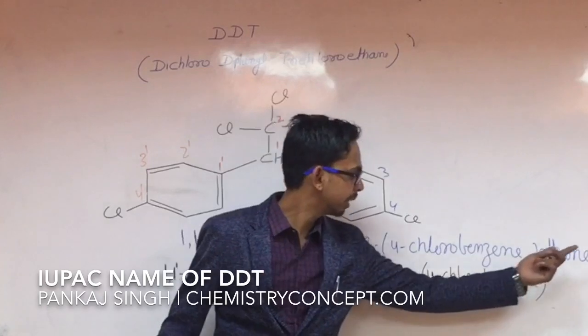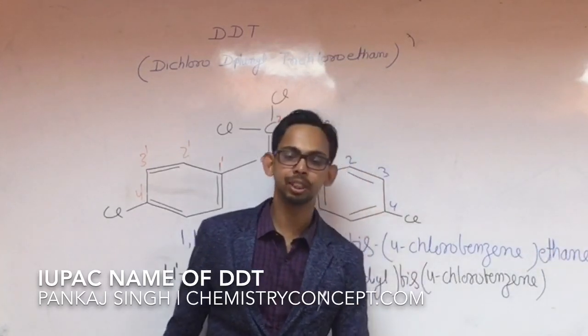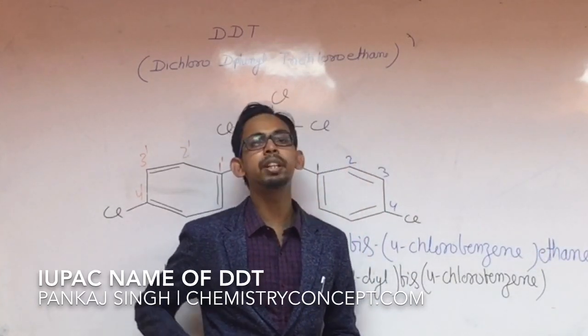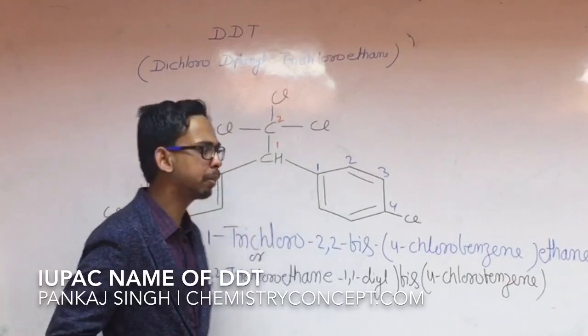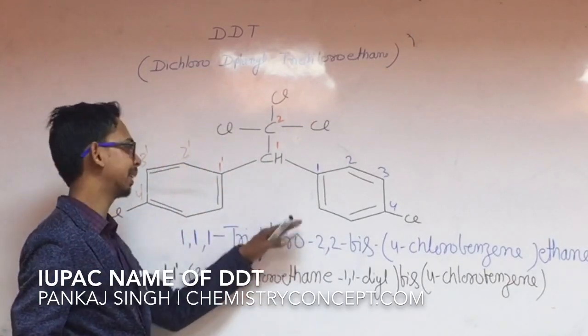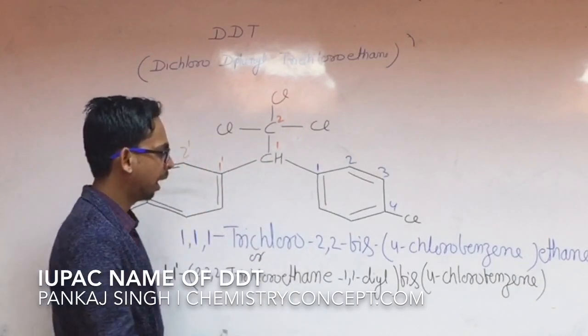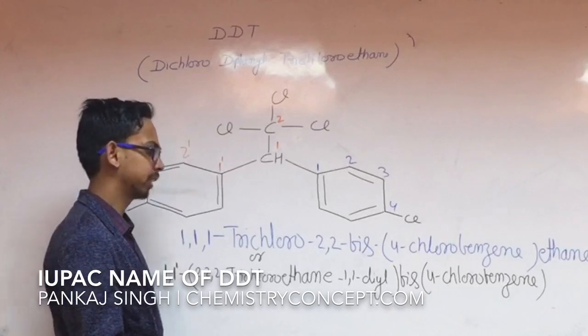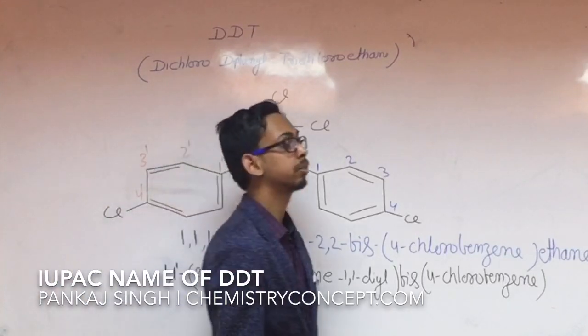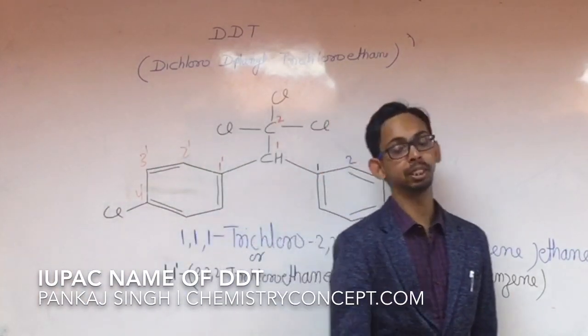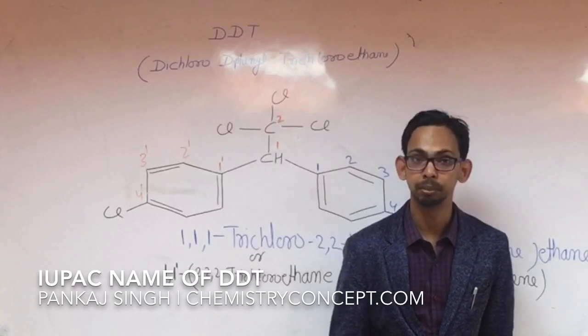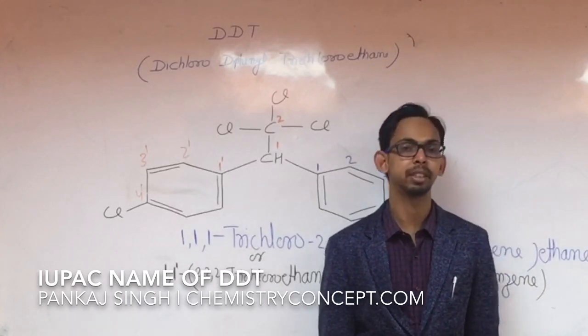Chlorobenzene is the main group. In the previous one, ethane was the main group. Both are equally correct, but both standard books say the second one is better as compared to the first one. I hope this was clear to you. If not, you can always ask in our comment section. Please don't forget to like the video and subscribe the channel and also share it with your friends. Thank you.